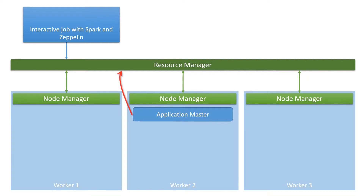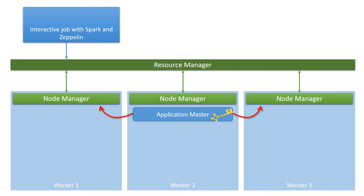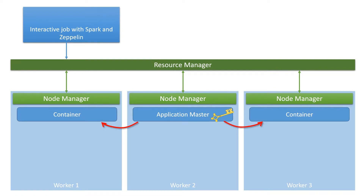The application master communicates with the resource manager to say it wants to run something. Now, if the user is allowed to use these resources, the resource manager gives an authorization key. And the application master can then communicate to the node managers to say it's going to put a container on a worker node. The application master will do this because it already has access via the resource manager, and so here we can create two containers. The application starts to run and, as you can see from the progress bar, it starts to use these resources to do its work — and it uses more and more resources until all resources in these containers are used.